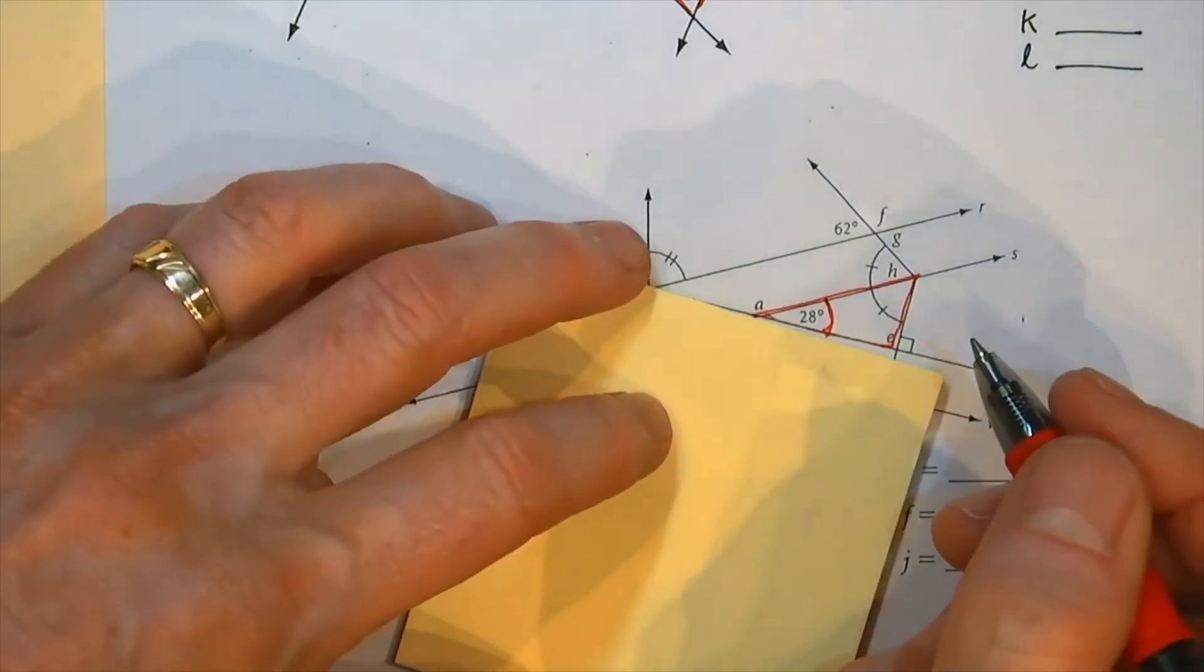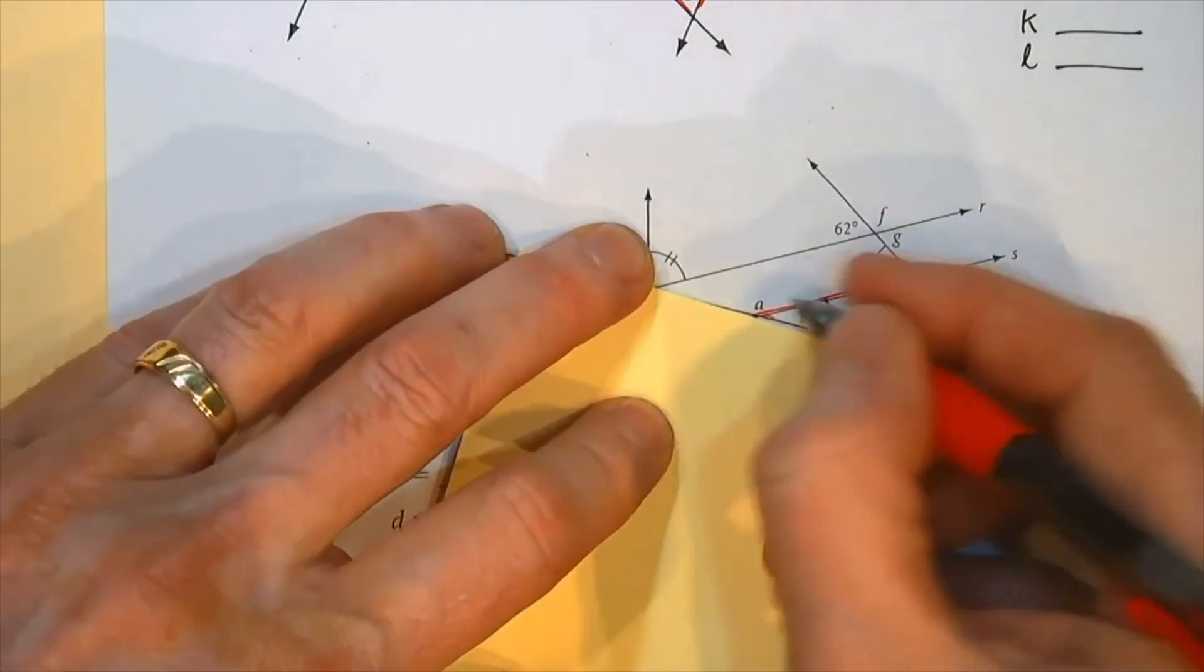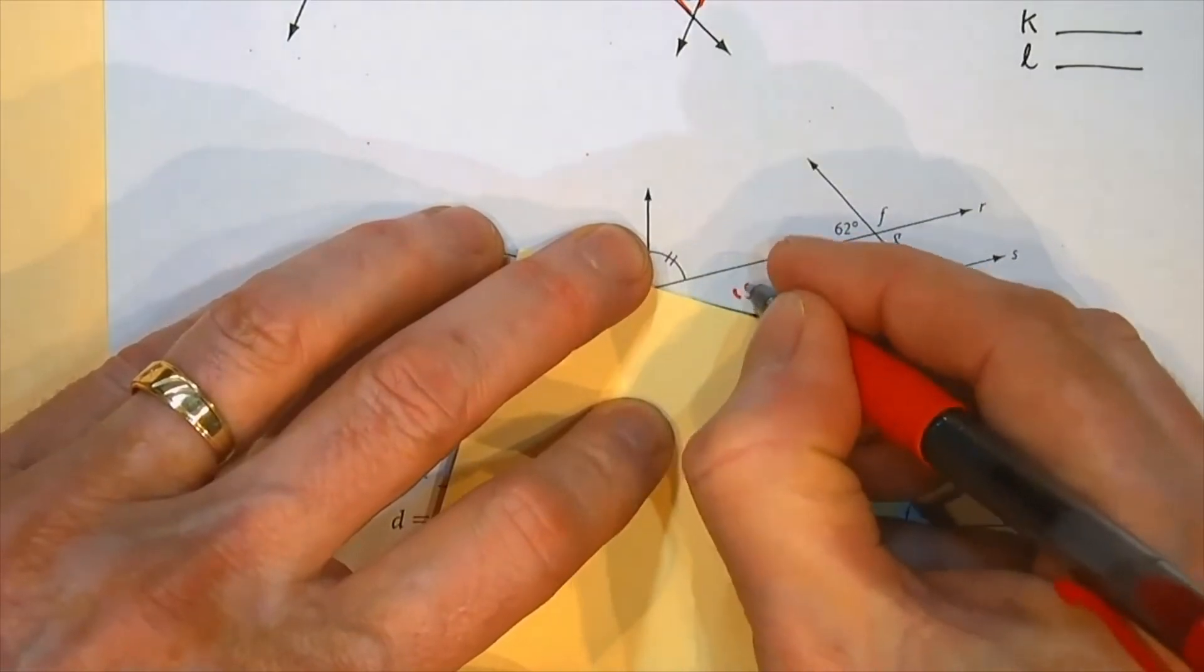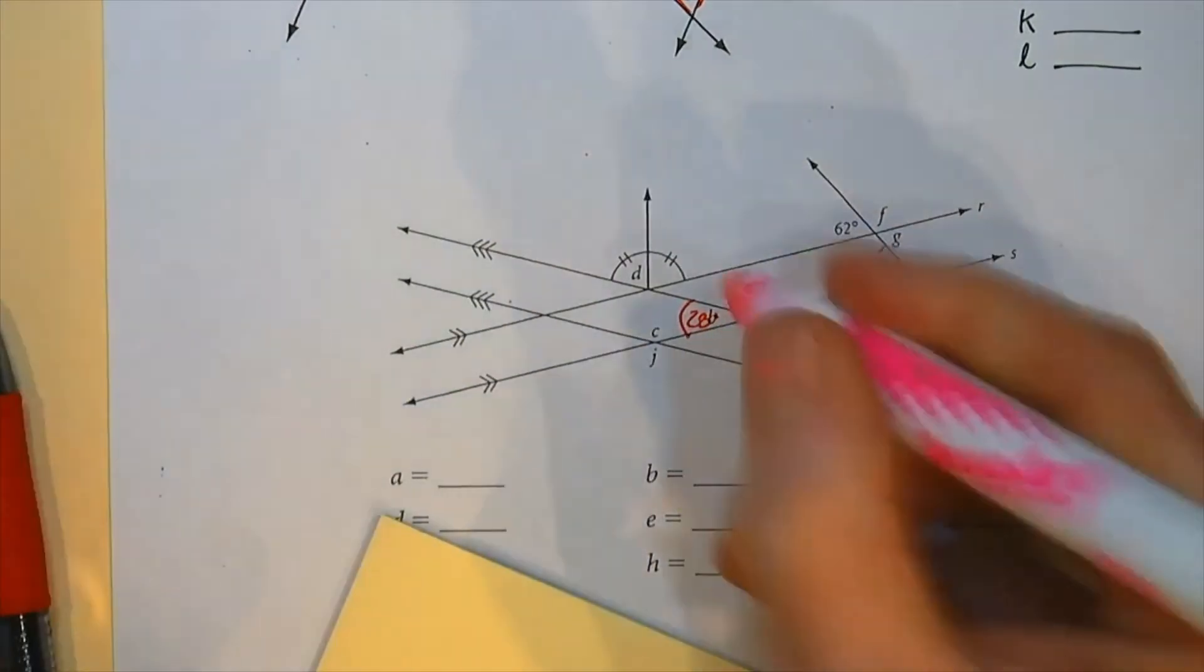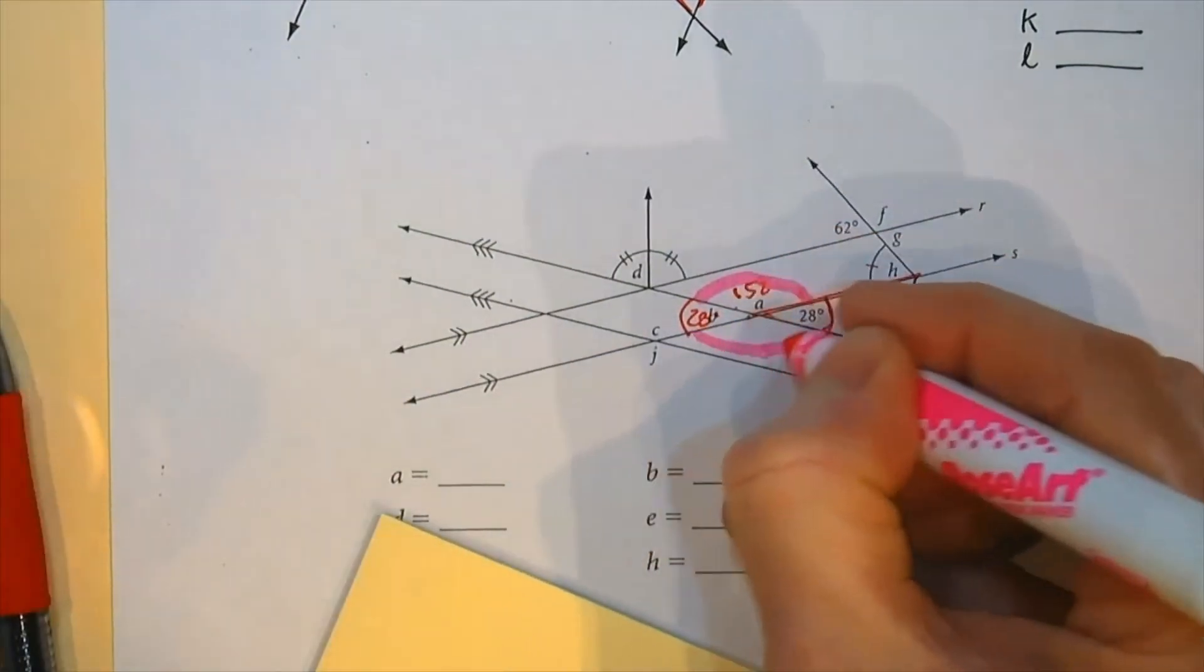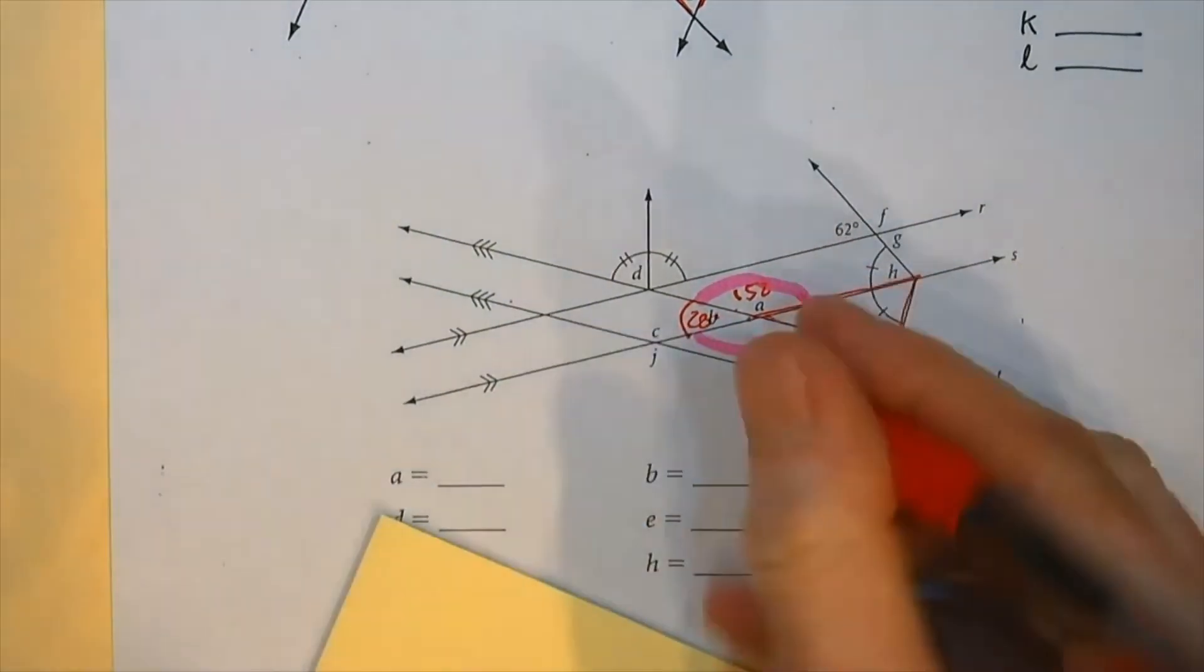And then once again, oh, that's 180. That's a straight line. 180 money says 152. Yeah. And then this, this here would go with this here. That's vertical. So write them in as you go.